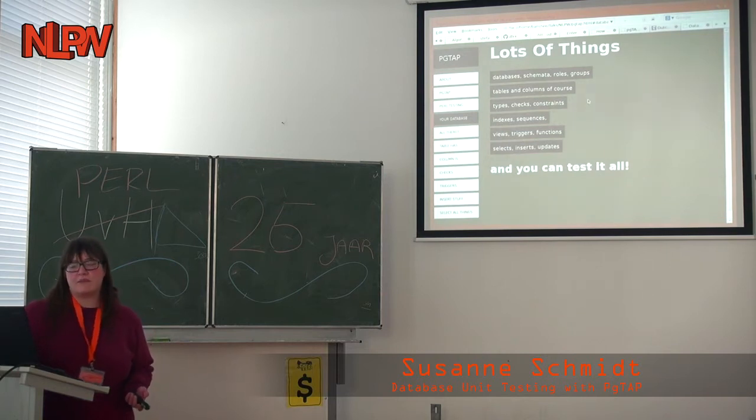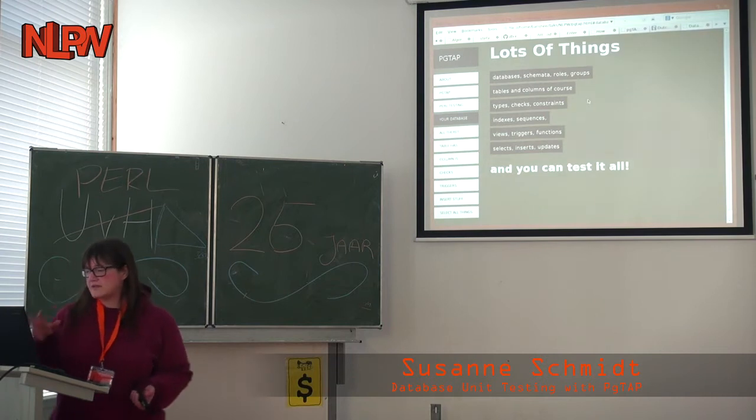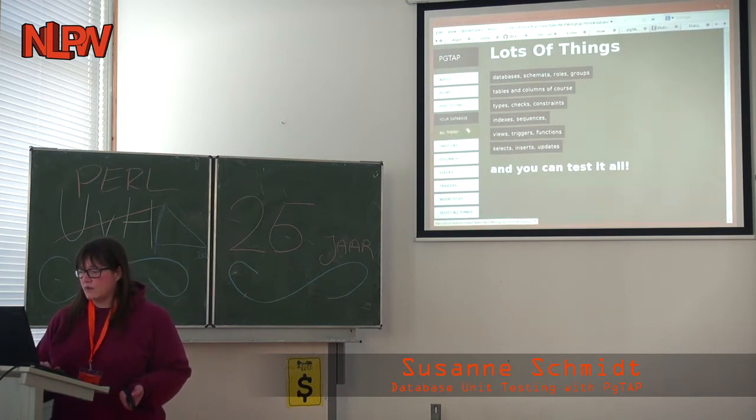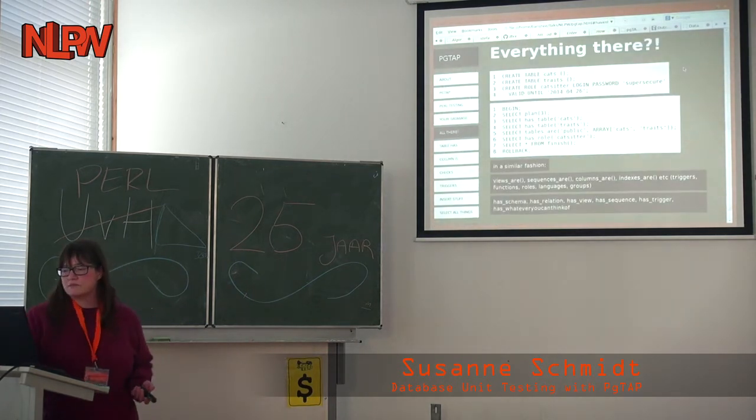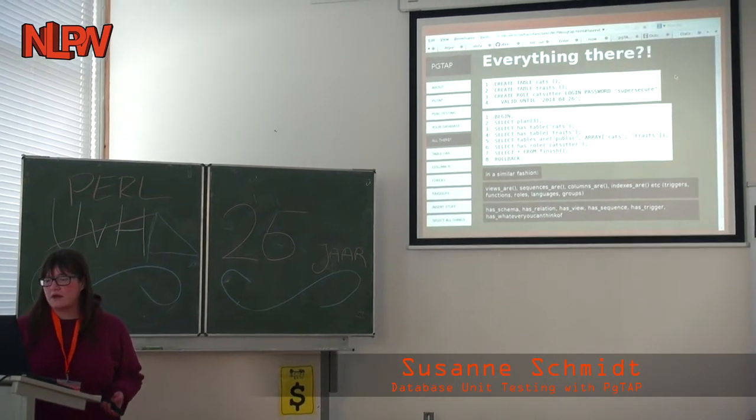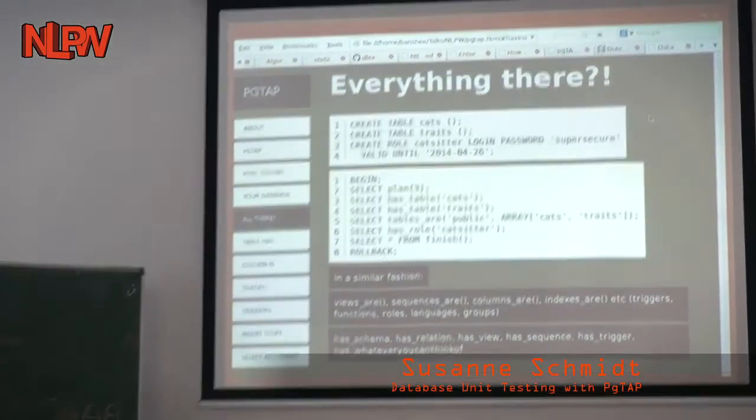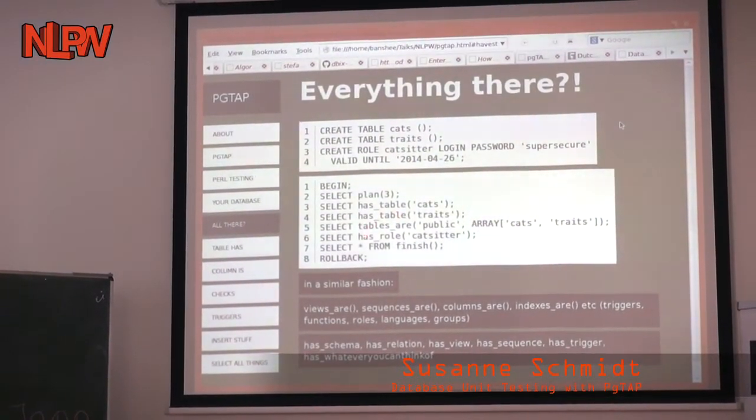So, what you're doing is, you look at your database and a database usually has really a lot of things. It has a couple of databases, it has schemas, it has roles, groups and users, grants and permissions. It has, of course, your tables and your columns. It has types and checks and constraints, it has indexes and sequences. You write, for example, in Postgres, lots of functions in different languages, of course. You write your triggers, you set up views and, of course, you actually do stuff with your data, namely selects, inserts and updates, of course.